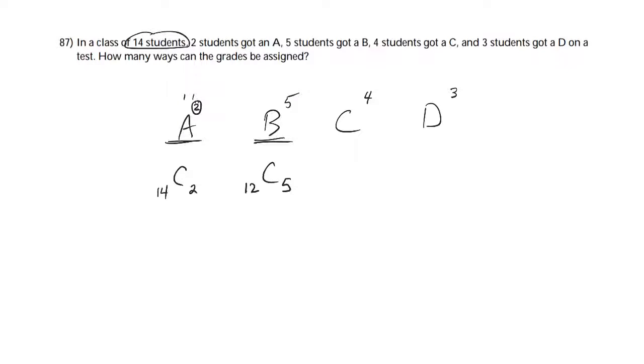So once I've chosen all five of those, then I'm only going to have seven people left, and from those, I'm going to choose four. And then lastly, I'll have three people left, and I want to choose three. So figure out what each of those things are, and then multiply it together.